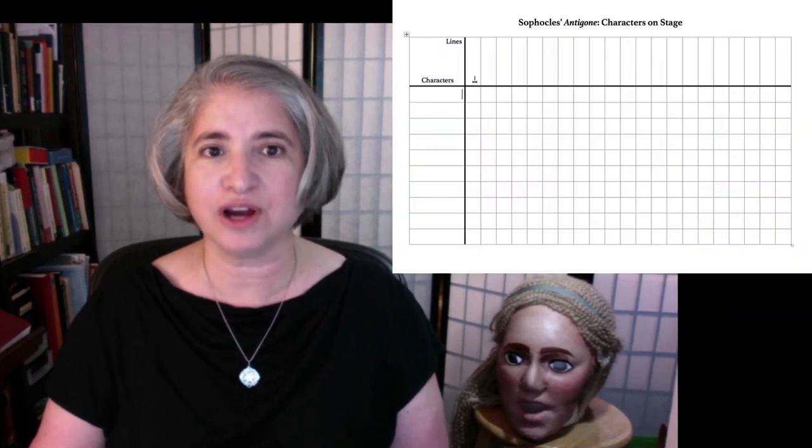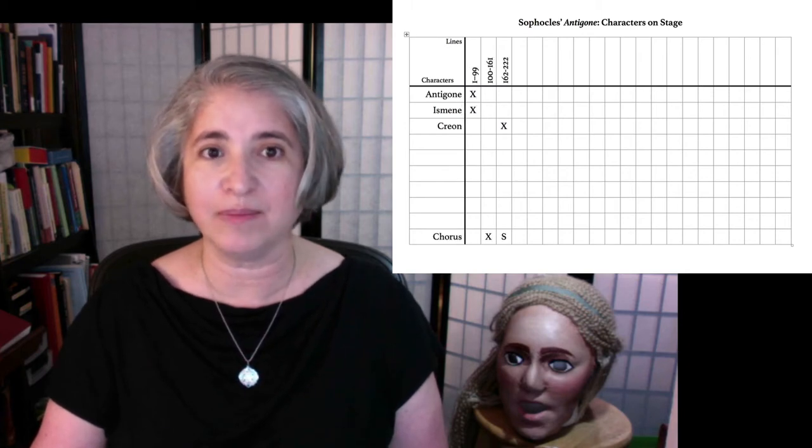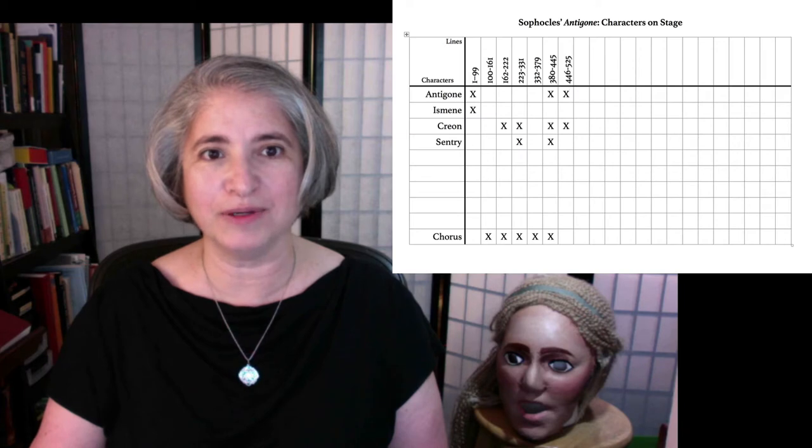Let's use as our example Sophocles' Antigone. Start yourself a chart when you begin the play. Note the line number when a character first starts to speak and put it at the top, and put the character's name on the side. Put an X in the box. Start a new column with new line numbers when somebody exits or when somebody new enters.